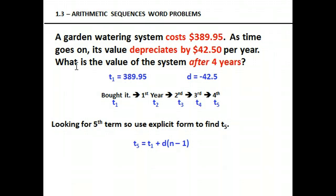Now, the key here is that it says what is the value of the system after four years? Our initial term, our $389.95, that's our first term. After our first term is our first year. So we bought it, and then after a year, that is t sub 2, our second term. After the second year is our third term, after the third is our fourth. So after four years, we're looking for the fifth term, t sub 5. Pause and plug your numbers in before you go on to the next slide.